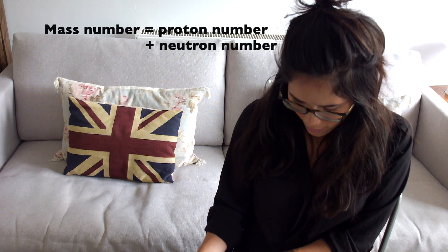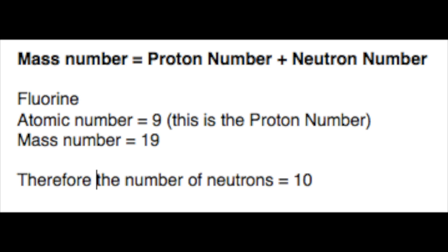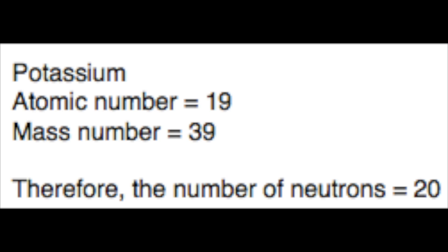For example, fluorine has an atomic number of 9, which tells me it has 9 protons. It has a mass number of 19 based on the periodic table, so the number of neutrons is 10, because 19 take away 9 is 10. Have a go at potassium. Potassium has an atomic number of 19, so there are 19 protons. Its mass number is 39, and therefore 19 of those come from protons, so the number of neutrons has to be 20.